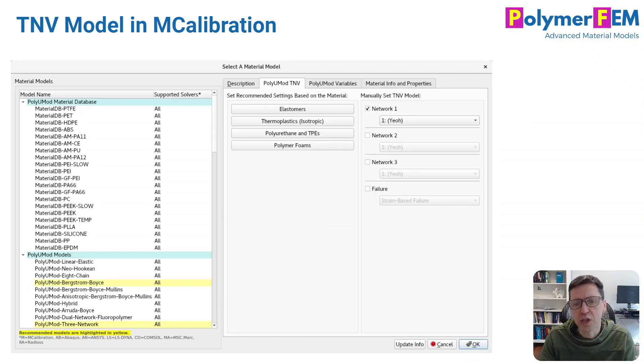So in MCalibration, which is what I use to calibrate this model, the way you use it is you specify the TNV model from the list on the left, and then you can specify the individual network types for the model to the right. You can select if you want two or three elements and networks, and then you can also add failure if you like. And there are also some predefined options that are very useful.